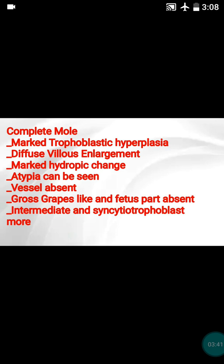In the villi, you will not be able to see nucleated RBCs or any vessels — that is a very important feature. Almost all villi are hydropically swollen, giving a gross appearance of grape-like clusters, similar to grapes. There will also be presence of more intermediate trophoblast, which is usually never seen in partial hydatidiform mole.